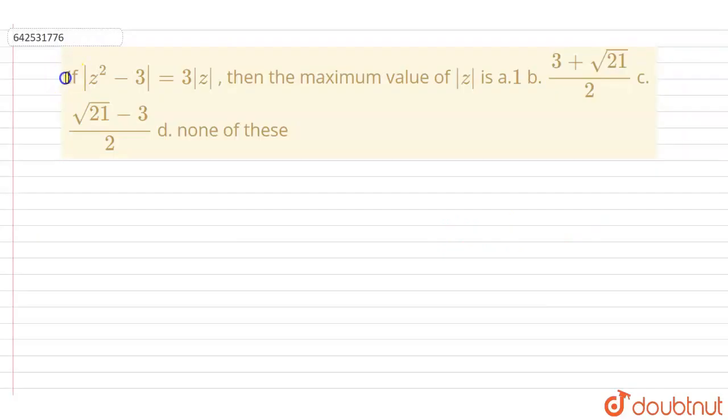So today's question is, if modulus of z squared minus 3 equals to 3 into mod z, the maximum value of mod z is. Their options are: 1, 3 plus root 21 upon 2, root 21 minus 3 upon 2, and none of these.